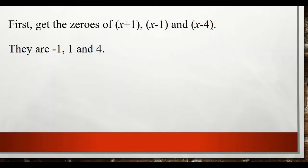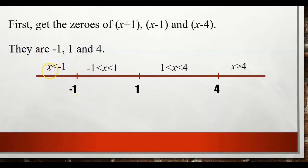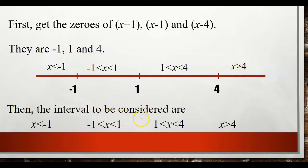Next, we draw a number line and place these three values on it. This gives us four intervals to consider: x less than negative 1; x between negative 1 and 1; x between 1 and 4; and x greater than 4. These four intervals will be placed into our table of signs.